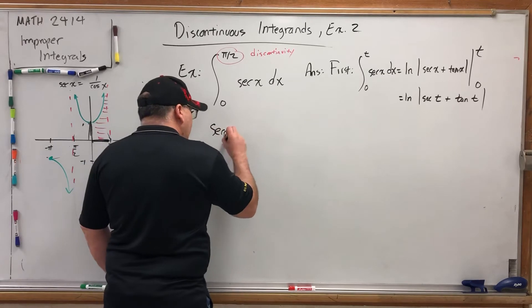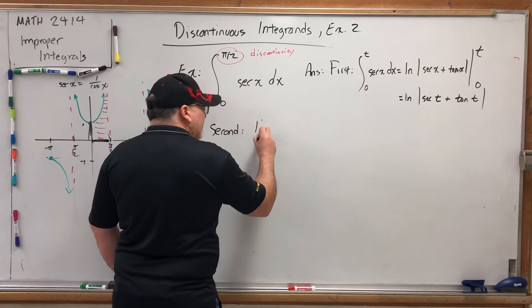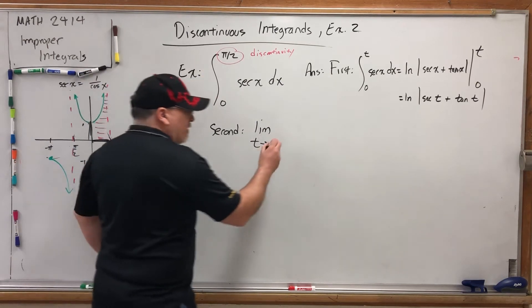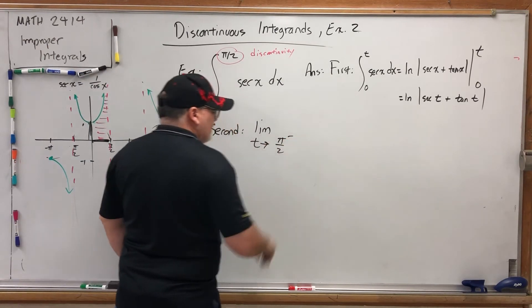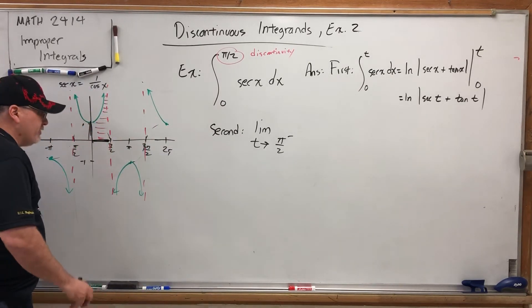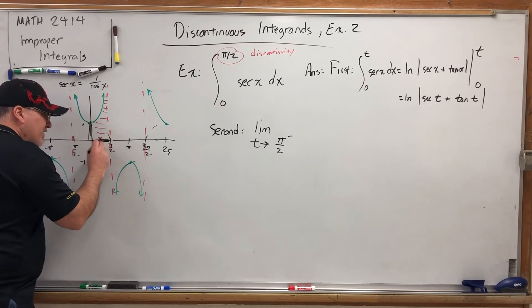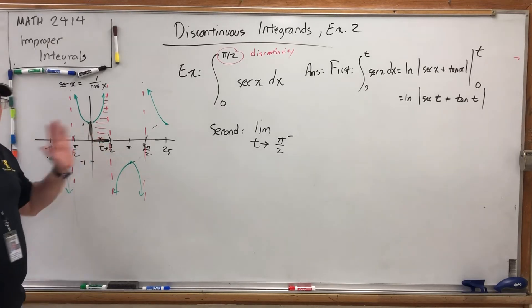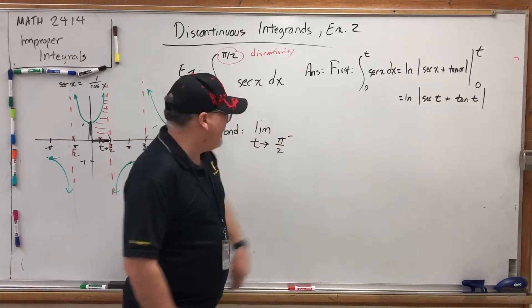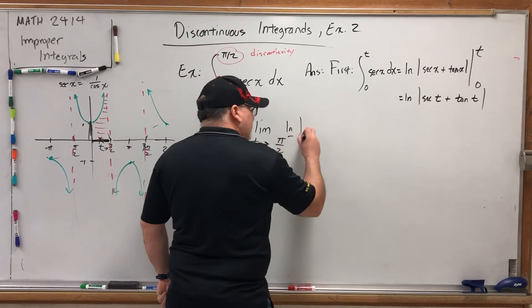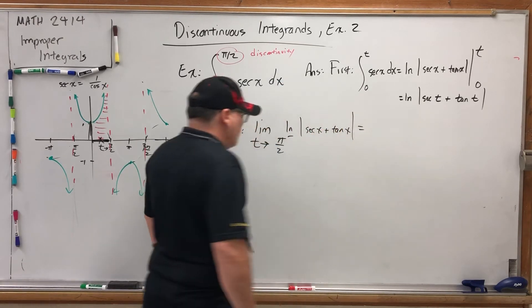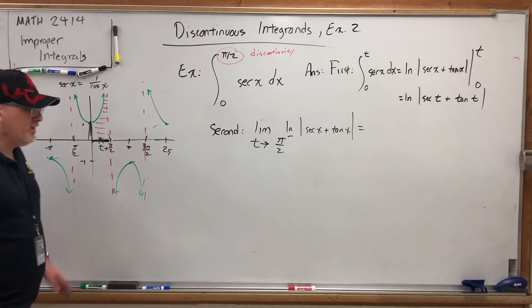Our second move is to take the limit as t approaches, not infinity, as t approaches this guy. But he'll be approaching π over 2 from the left. And again, that's because we are in this interval from 0 to π over 2. And we want the t to be in that interval. And it has to approach π over 2 from the left side. The limit as t approaches π over 2 from the left of that guy, natural log absolute value of secant of t plus tangent of t. So we have to ask ourselves, what happens if we get closer to π over 2?